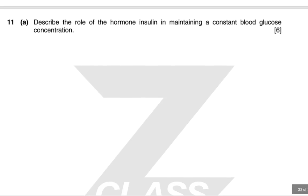The rise in blood glucose concentration is detected by beta cells in the pancreas, which release insulin into the blood. Insulin binds to surface receptors on liver and muscle cells, increasing their permeability to glucose. Cells take up glucose and increase its use in respiration; in liver cells, glucose is converted to glycogen. The overall effect is that blood glucose concentration falls. Insulin also inhibits glycogen breakdown.